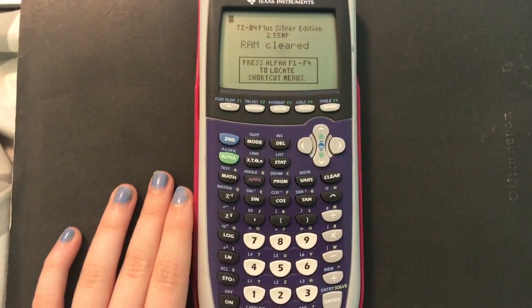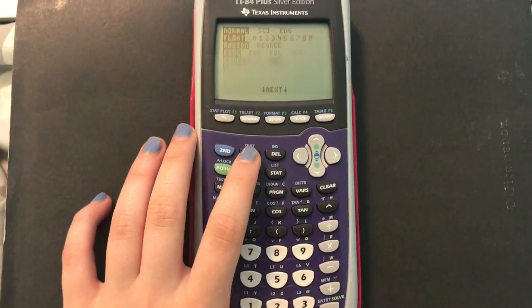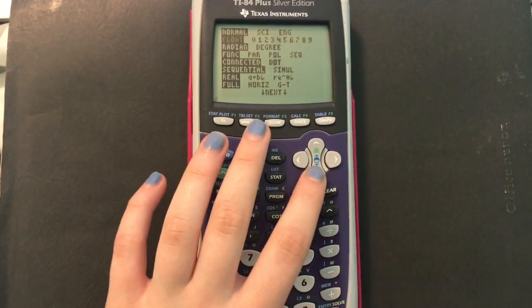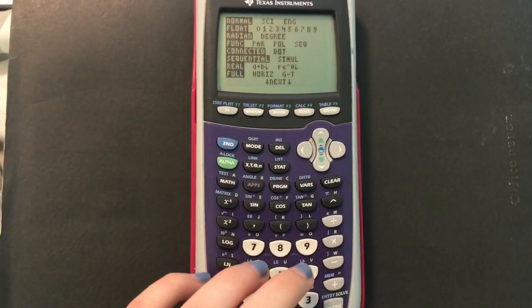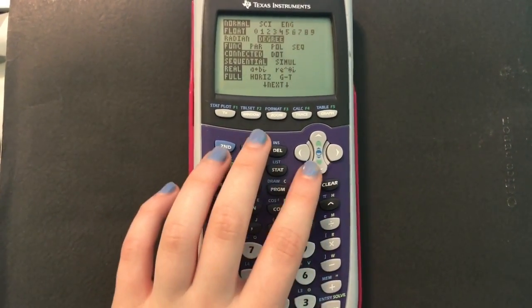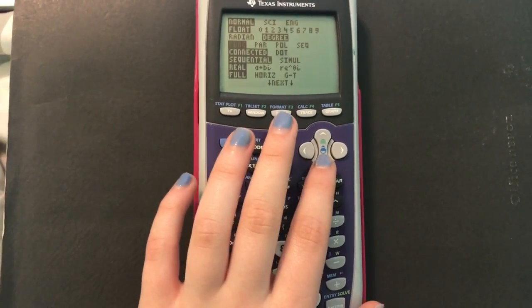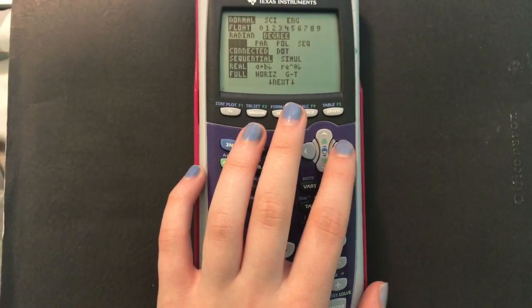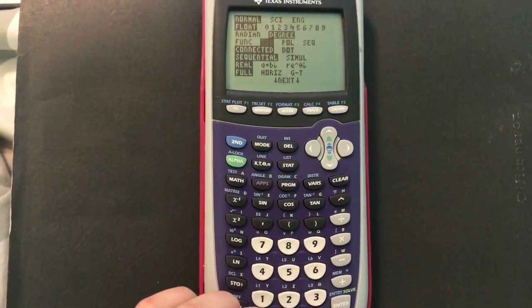So first what you're going to do is go to mode, and you want it to be in degrees, like I just said. Again, you could do it in radians, but it's just a little bit different window, and it's a little bit harder to interpret. And then you want it to be in a parametric equation.